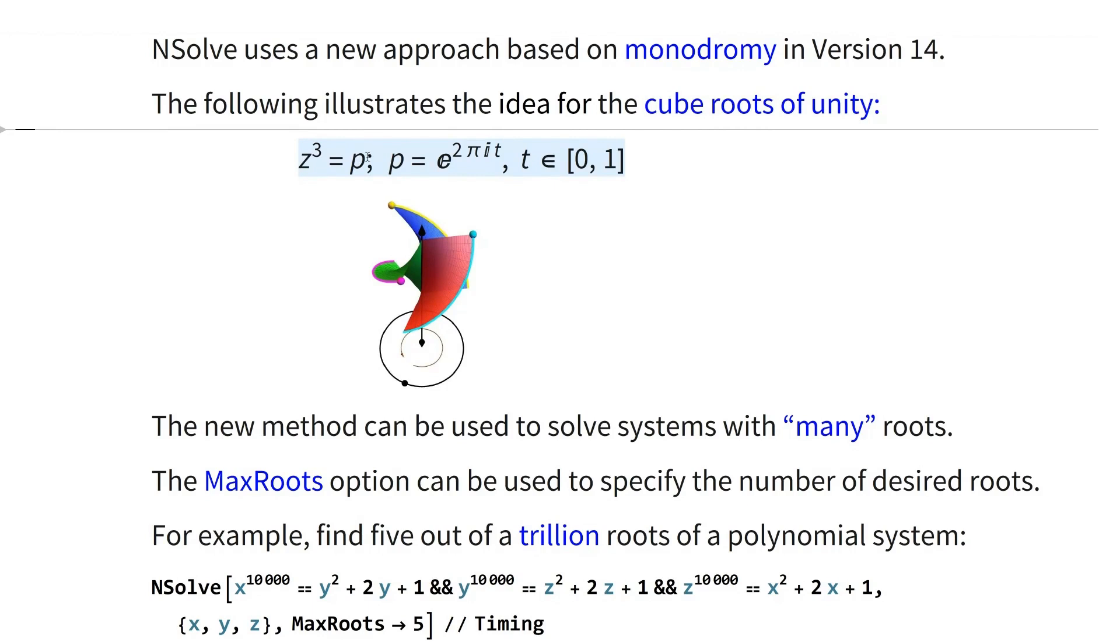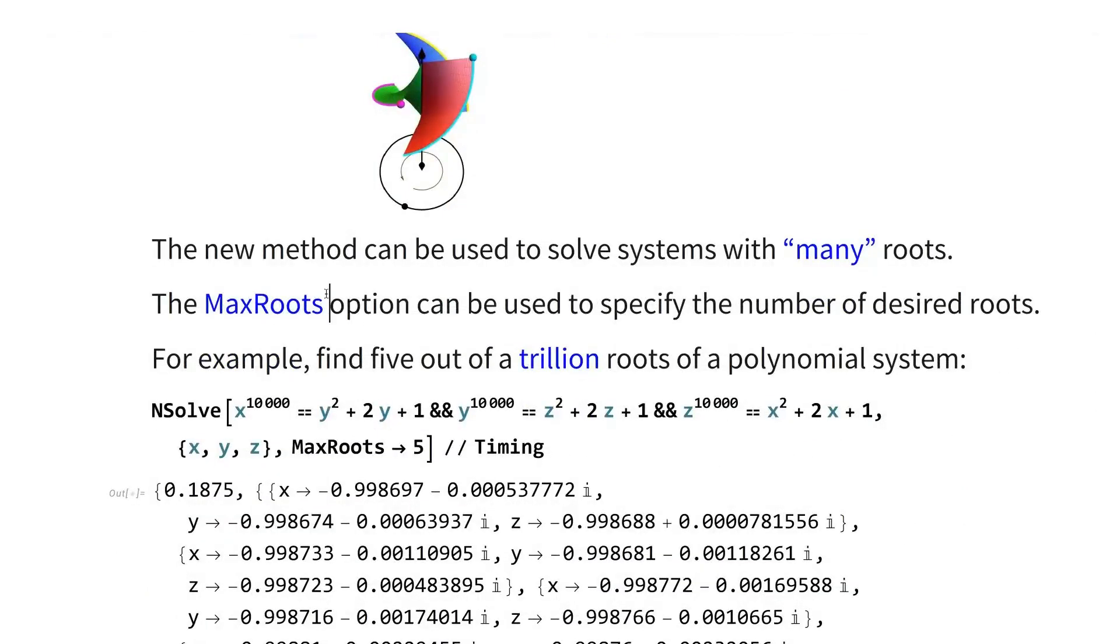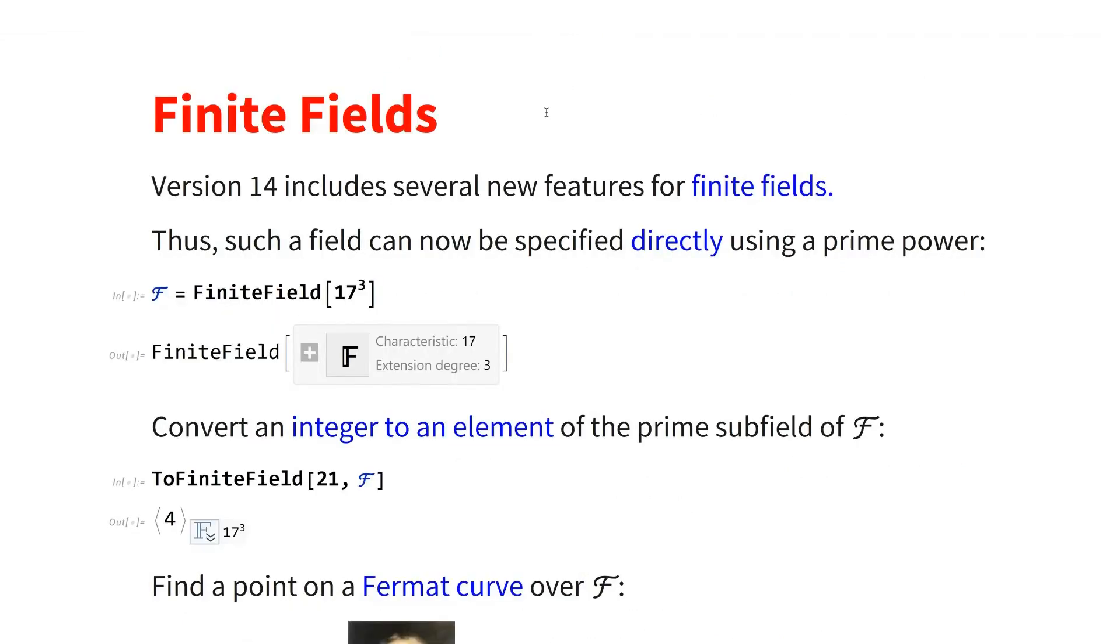So you introduce the parameter p. So because z cubed is p, when p runs around a circle, the z moves only one third of the way. So the point here is that if you start from one root of unity, then you can go to the next cube root by going around one circle. So p can keep going around and finding more and more roots. You have an option called MaxRoots, which can be used to specify how many roots you want for your system.